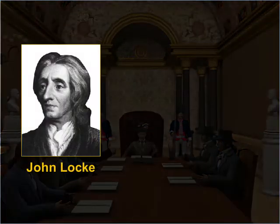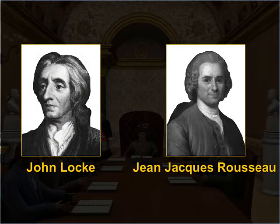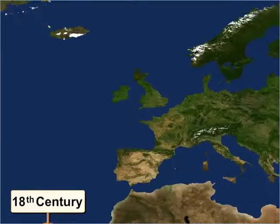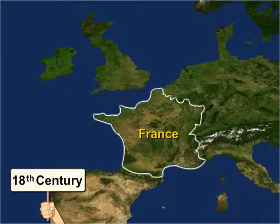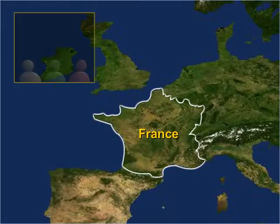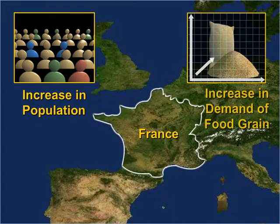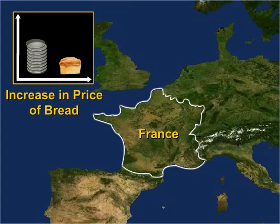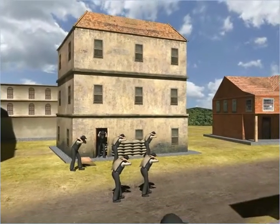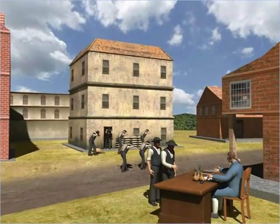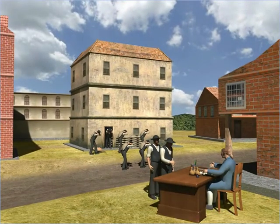Philosophers such as John Locke and Georges-Jacques Rousseau carried such ideas forward. In the 18th century, France also witnessed a rapid increase in population. This population growth led to an increase in the demand for food grains in France, thus leading to an increase in the price of bread. However, people who worked as labourers continued to get fixed wages, which were insufficient to keep pace with the rising prices.